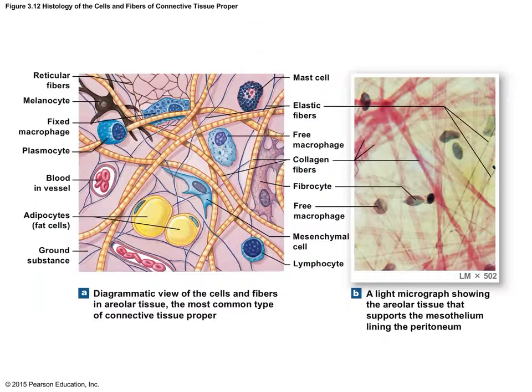Our first tissue type is areolar connective tissue — I'll use 'CT' for connective tissue throughout. Let's talk about fiber types: there are three fiber types in connective tissue — collagen, elastin, and reticular fibers.